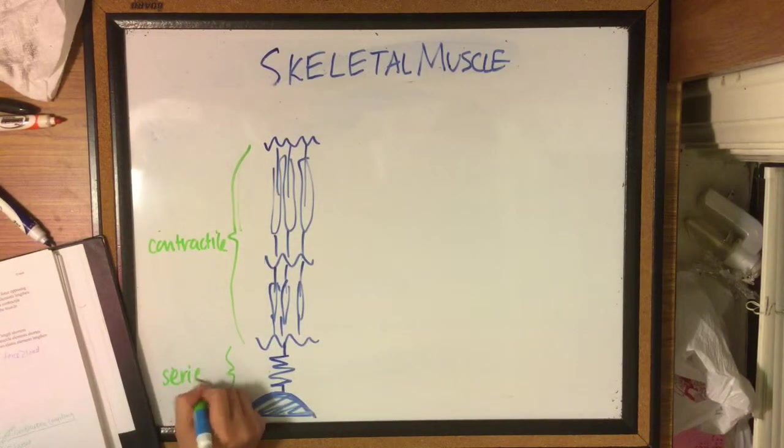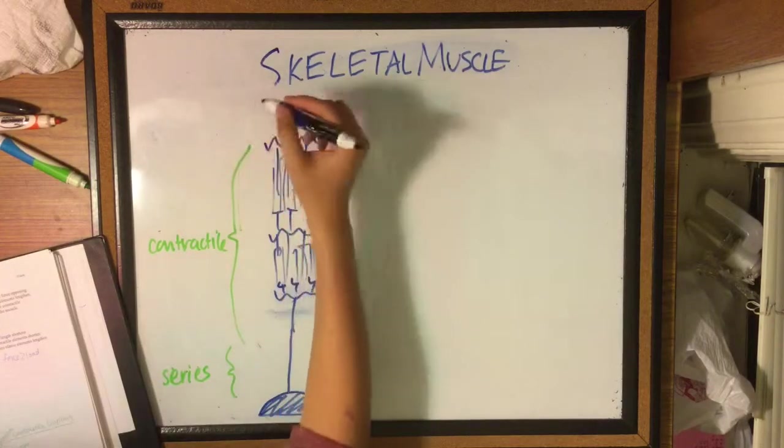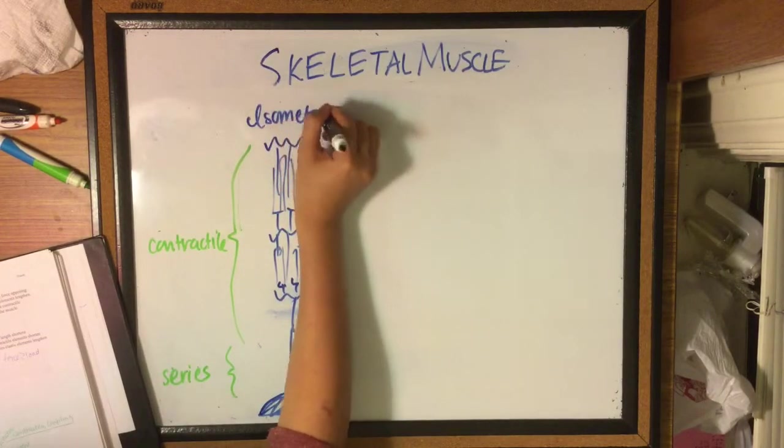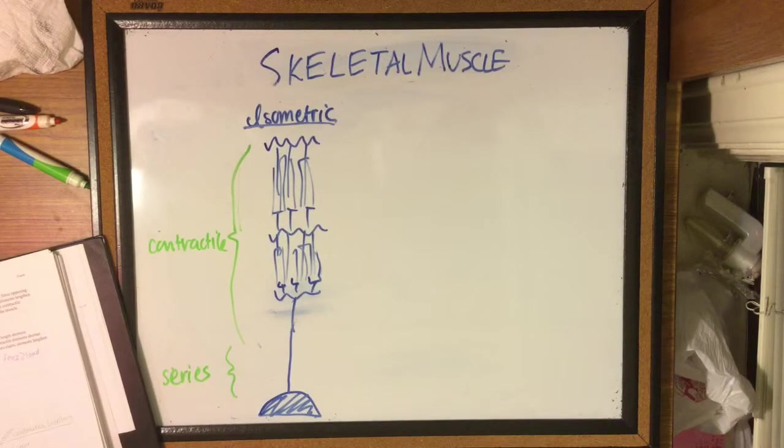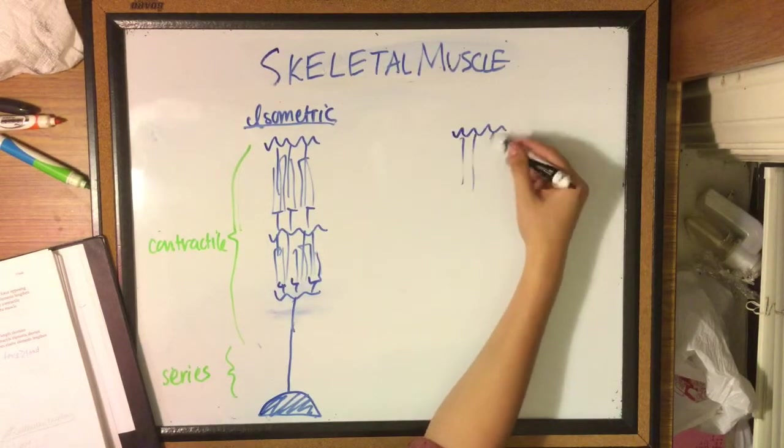However, the contractile element shortens. But the whole muscle does not actually change its length. This is called isometric contraction.